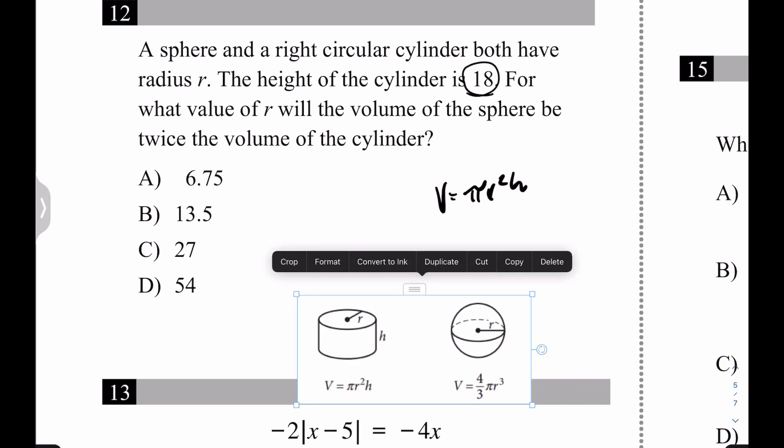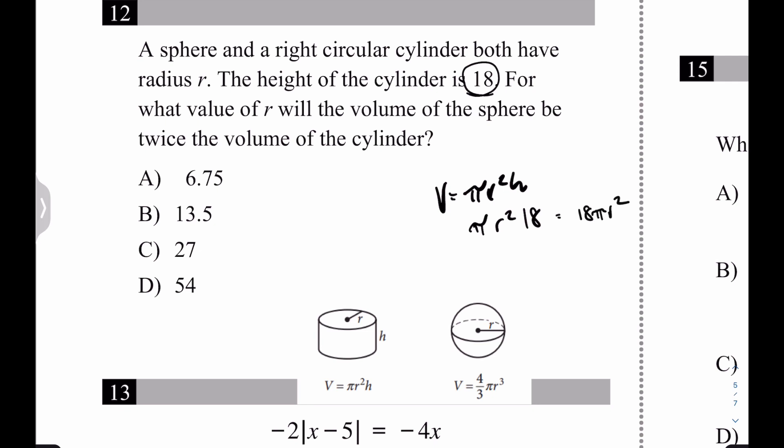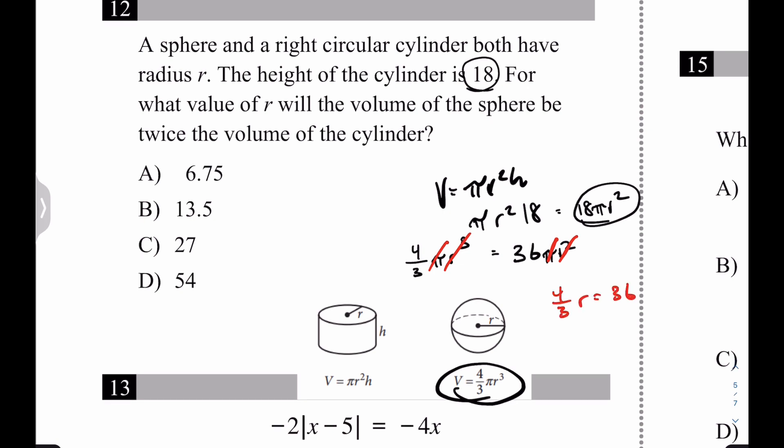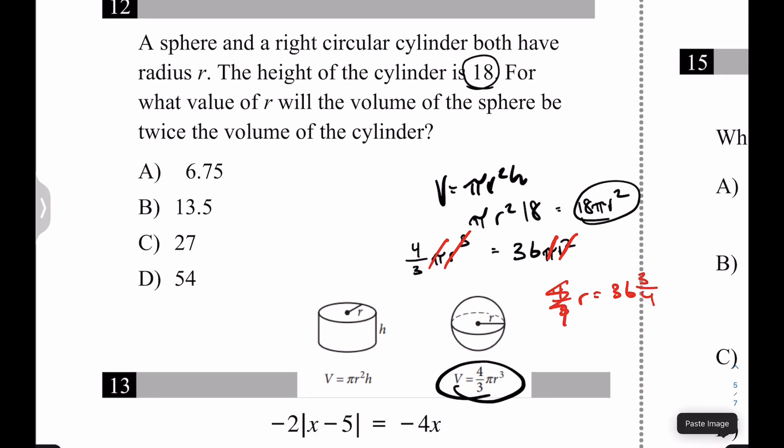Okay. So again, pi r squared h, so we have pi r squared, the radius is r, and then the height is 18. So really, at the end of the day, we have 18 pi r squared. And we're told that we want a sphere to be twice the volume of the cylinder. So twice the volume of that, so that's really twice, so 36 pi r squared, and that equals 4 thirds pi r cubed. Again, that's the volume of the sphere. So now what? Well, at this point, we can just cancel out a pi, pull out an r squared from both sides, so we really have 4 thirds r equals 36, multiply both sides by the reciprocal, so 3 fourths. And what's 36 times 3 fourths? That's going to be 27. Let's see. Sweet.